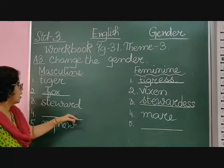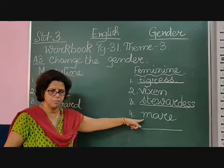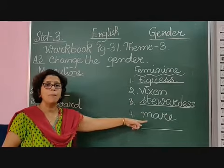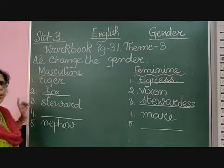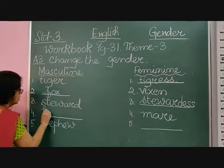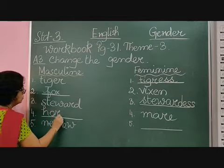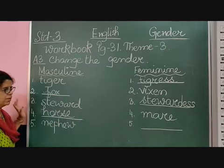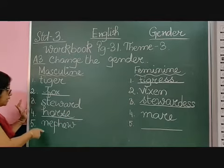Then you have a blank — you have to write the masculine of mare. Now, you remember mare is a horse. When you say horse, it is mare; when you say mare, it is female. So the masculine of mare is horse.